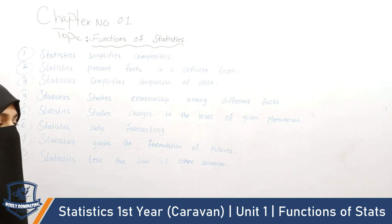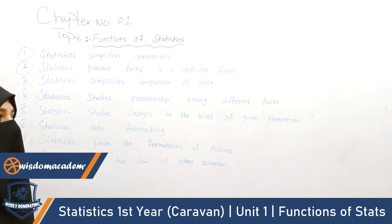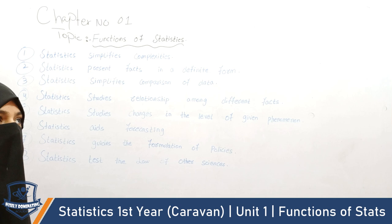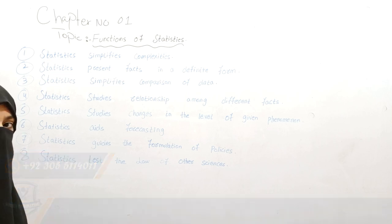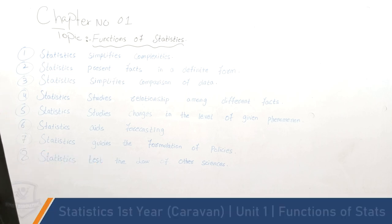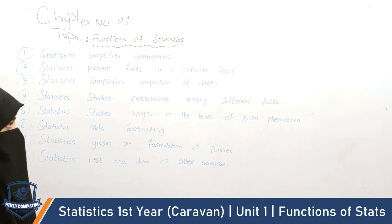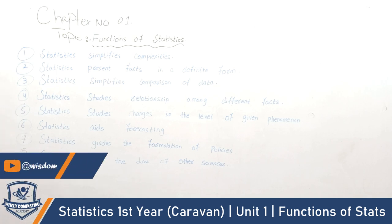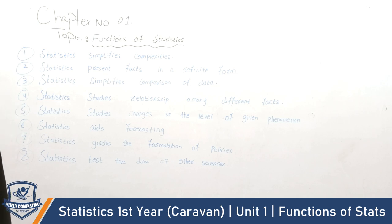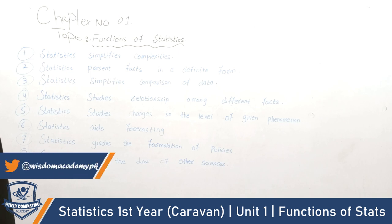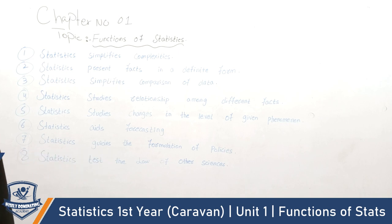Now we can compare the results of different data sets. For example, we can compare sales data from 2021 and 2023. In this way, statistics allows us to compare the results of multiple data sets.